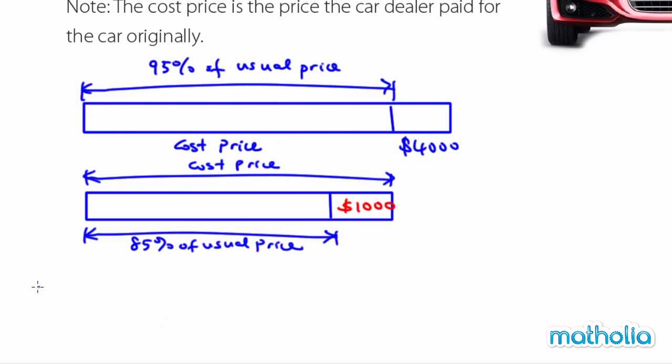Now, from there, we know that 95% subtract 85% is equal to 10%. So my 10% of usual price is equal to $4,000 plus $1,000 and that amounts to $5,000.